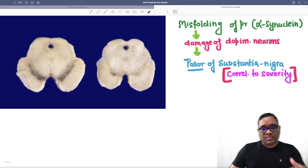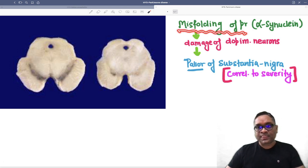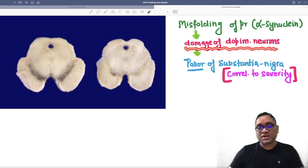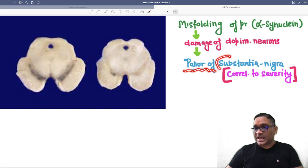When you look at Parkinson's disease pathogenesis, it is because of the misfolding of a protein—which protein? Alpha-synuclein. Alpha-synuclein misfolding causes damage to dopaminergic neurons, leading to pallor of the basal ganglia nuclei called substantia nigra. This pallor correlates to the severity of Parkinson's disease.